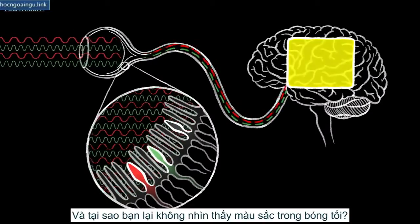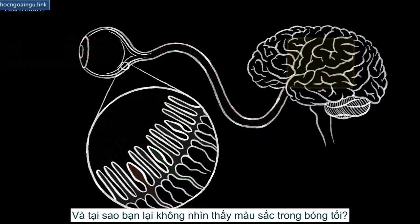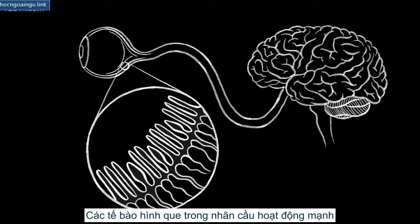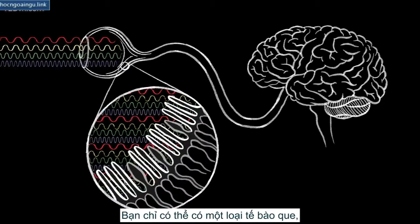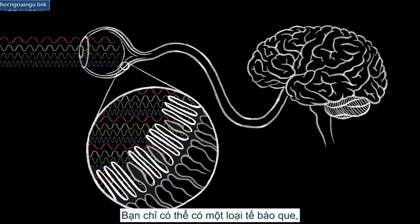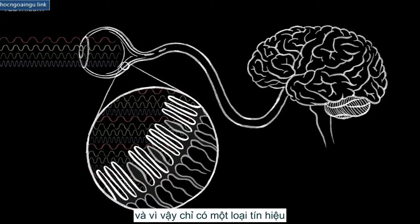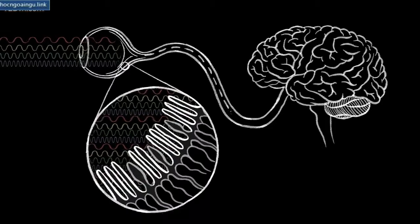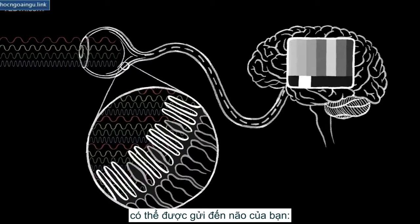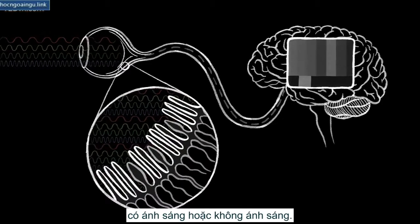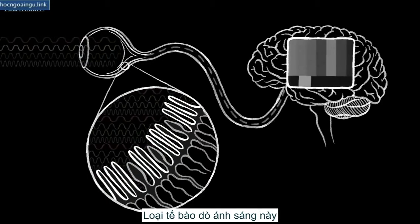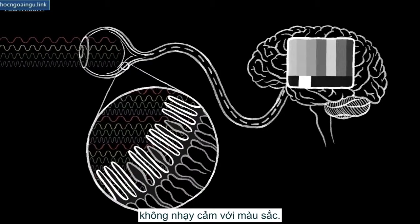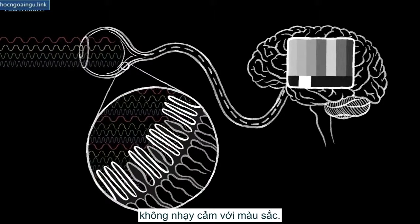And how come you can't detect colors when it's dark? Well, the rod cells in your retina take over in low-light conditions. You only have one kind of rod cell, and so there's only one type of signal that can get sent to your brain: light or no light. Having only one kind of light detector doesn't leave any room for seeing color.